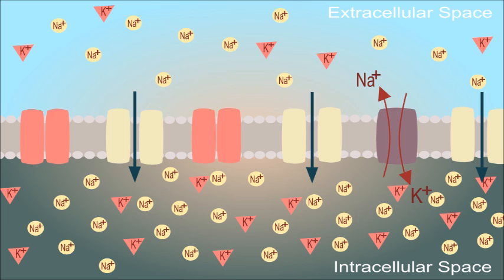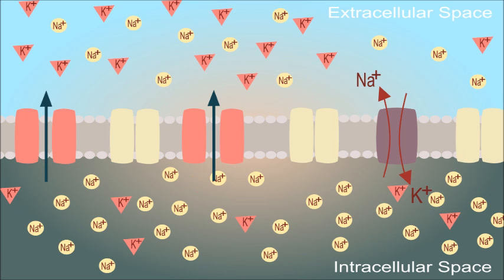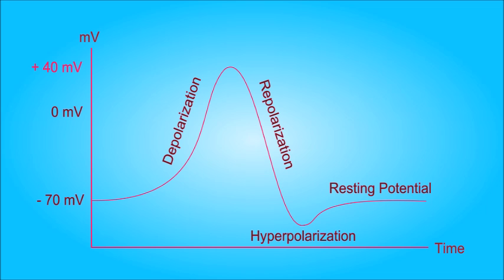Shortly after the channels have opened, they will close again and potassium channels will then open, letting out positive potassium ions to recreate the negative environment inside the neuron and the positive environment outside. This happens at around plus 40 millivolt and causes a repolarization where the intracellular space becomes negative again.